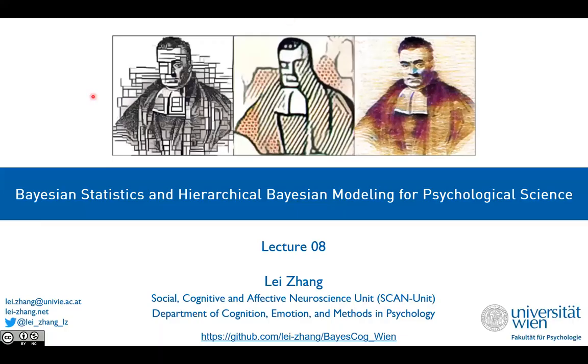Welcome back everyone. Let's continue our Bayesian statistics seminar. Last week we talked about the very first implementation of the STAN model of a binomial function, to solve our globe tossing exercise or the variant version of the coin flipping exercise.